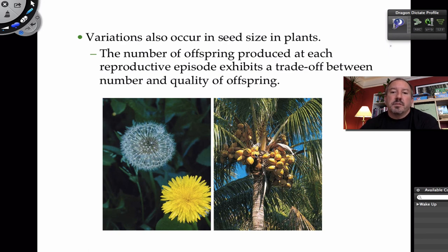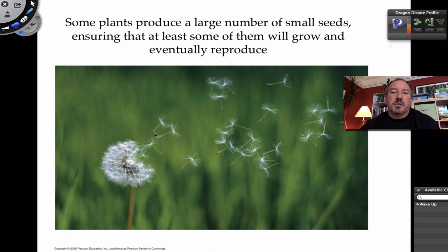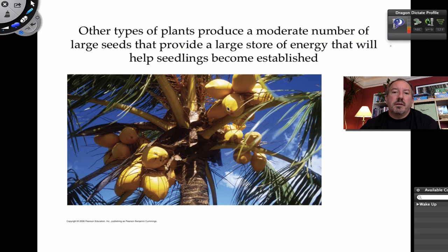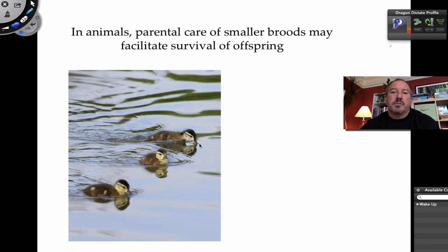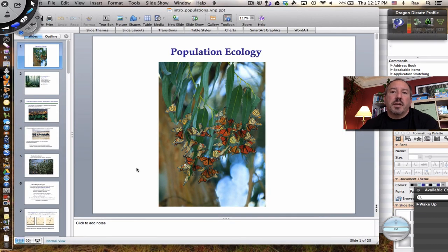Here's a tree with giant coconuts — huge seeds, not as many, but the quality is good. You put a lot of effort into the offspring and more of them survive. So the small seeds are few in quality but many in number, while large seeds are few but have a better chance of surviving. Even in animals, when there's parental care from the mother, you can have a smaller clutch size and that will facilitate their survival. I hope you enjoyed this introductory video on population ecology. Thanks for watching.